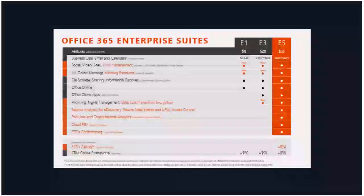With E3 you get unlimited business-class email and calendar. The 50 gigabyte limit comes with E1, but E3 and E5 both have unlimited plans for email. Some of the other new features in E5 include analytics for e-discovery, secure attachments, access control, org analytics, cloud PBX, and PSTN conferencing.